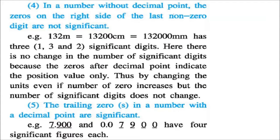In a number without a decimal point, the zeros on the right side of the last non-zero digit are not significant. For example, 132 m can be written as 13200 cm or 132000 mm — this is only 3 significant digits: 1, 3, and 2. There is no change in significant digits by changing units; the trailing zeros only indicate position value.